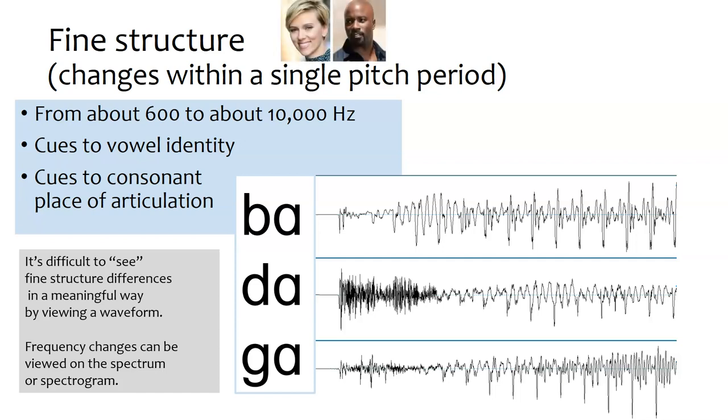So that's it for this video. We've learned about envelope, periodicity, and fine structure. And the next capsule what we'll look at is the source filter model of vowel production.